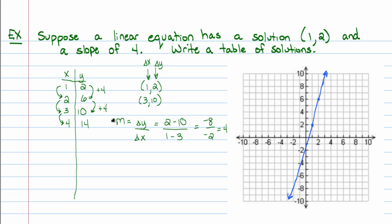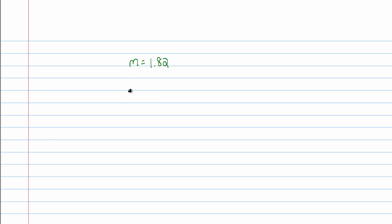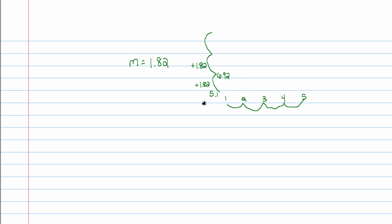It gives you a lot of conceptual ideas about what slope really does to a line. It means that if somebody tells me the slope for a line is, let's say, 1.82, then every step along in the x direction, the y-value will increase by 1.82. So if it started at the height of 5.1, we'd add 1.82 to get 6.92, then add another 1.82 for the next point, and so on. So slope is just saying: take a step forward, add the slope; take a step forward, add the slope.